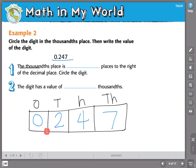The thousandths place is one, two, three. Three places to the right of the decimal point. We're going to circle that digit. The digit has a value of seven. Seven what? Seven thousandths.